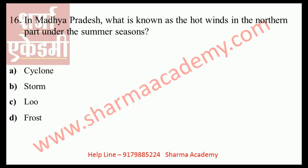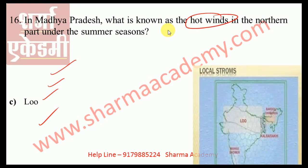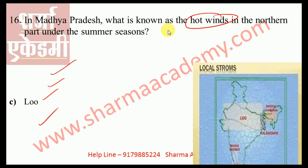The next question: in Madhya Pradesh, what is known as the hot winds in the northern part during summer seasons? Options are: A) Cyclone, B) Storm, C) Loo, D) Frost. Since it is regarding hot winds, the correct answer is definitely Loo. In the north part of Madhya Pradesh, these winds are known by the name of Loo.